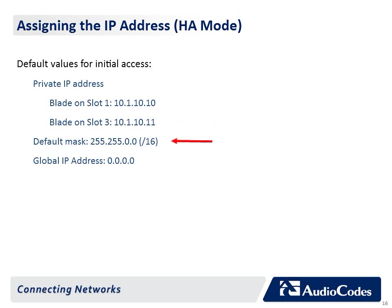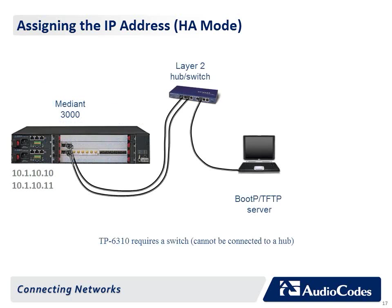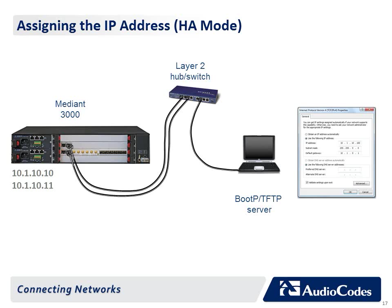The default mask is 255.255.0.0 and the default global IP address is 0.0.0.0. The first step to assign the IP address consists of connecting your PC to both TP blades via a hub or switch. If you are using TP6310 blades, it has to be a switch and not a hub. Change the IP address and subnet mask of your computer to correspond with the default private IP addresses and the subnet masks of the device.